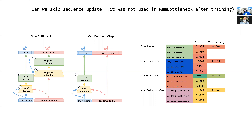Another question: the attention mechanism was originally proposed to get rid of the bottleneck in sequence-to-sequence models, where all information from an input sequence of arbitrary length was compressed into a fixed-size vector. Now we're reintroducing that bottleneck — is that a concern?